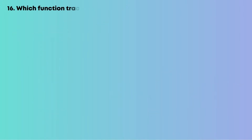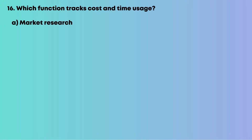Question 16: Which function tracks cost and time usage? Options are: A, market research; B, performance measurement.